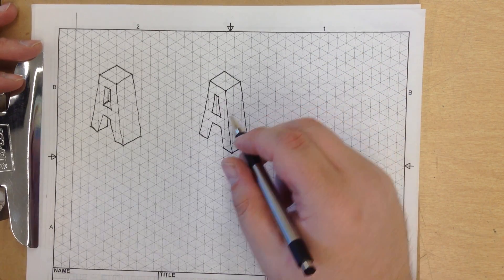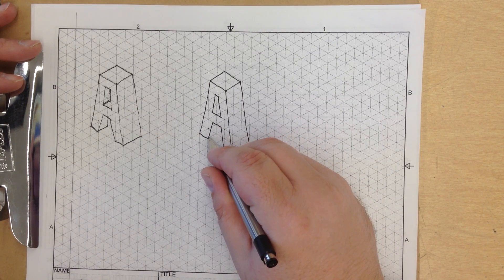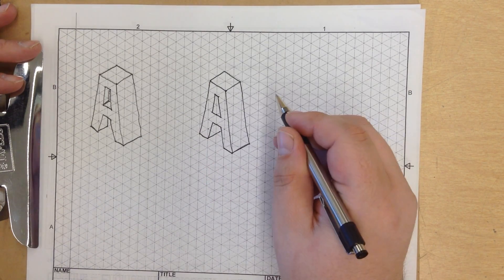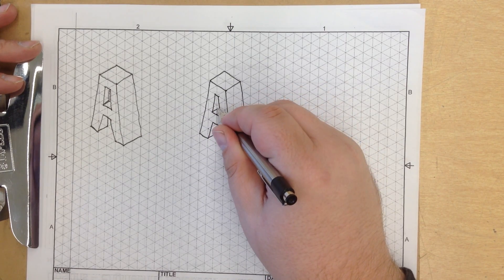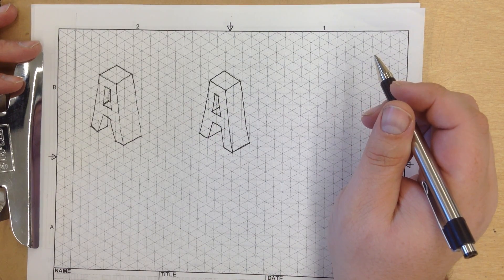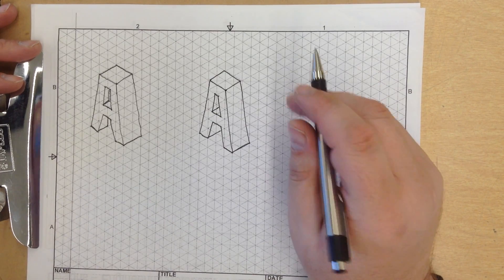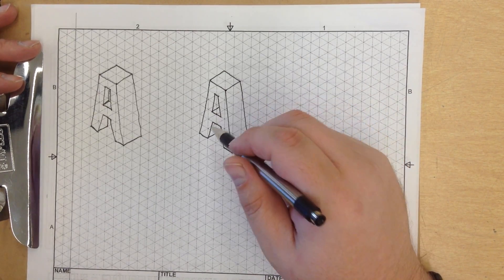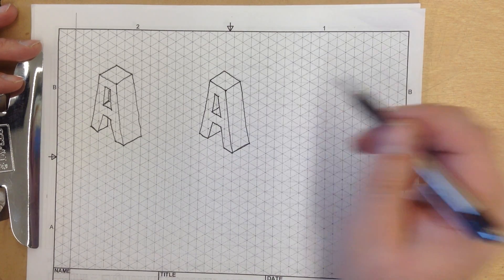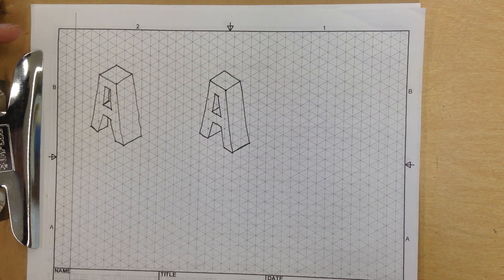Now the only thing that we have left is a bottom line to give ourselves some depth. Same thing right here. That is our letter A. If you have any difficulty with this, stop the video, rewind it, and replay it as many times as you need so you can follow step by step with me. Thank you. Thank you so much.